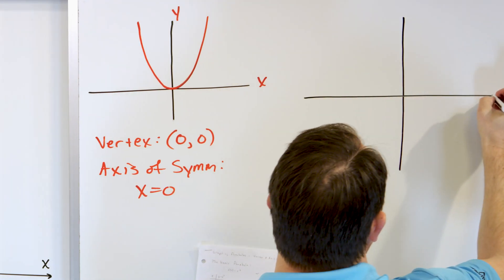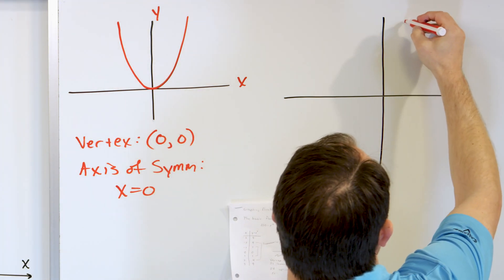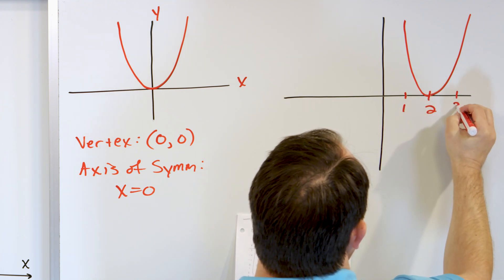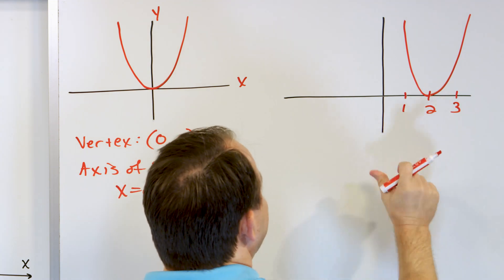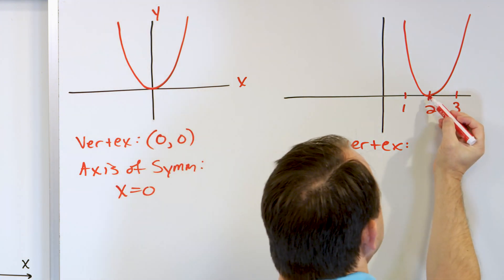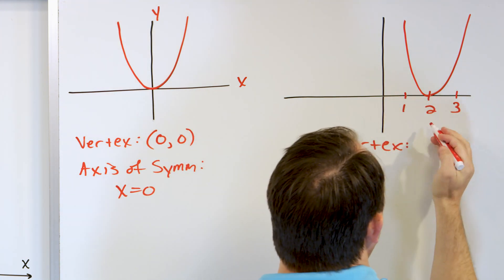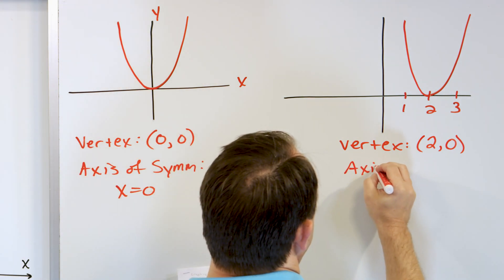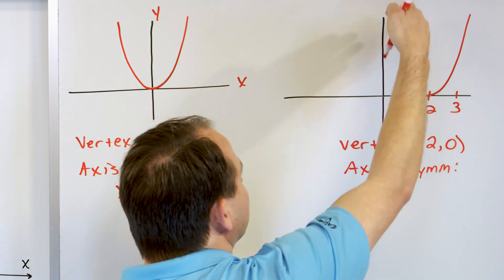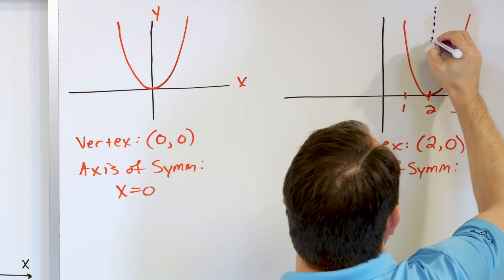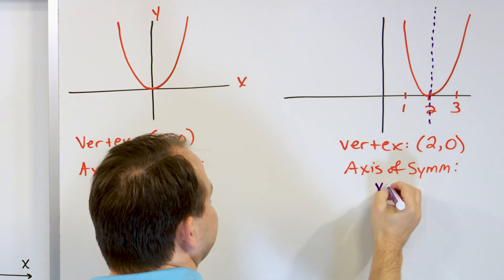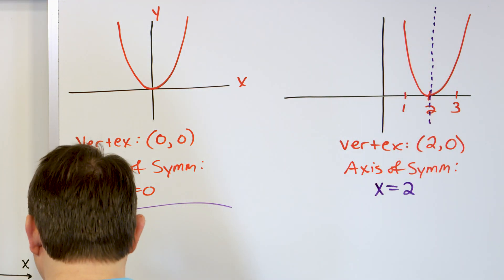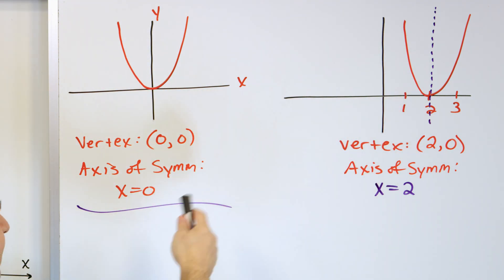Now let's take the basic parabola and shift it. Let's draw another parabola over here — it looks exactly the same, just shifted over. This is 1, this is 2, this is 3. What would the vertex and the axis of symmetry be here? The vertex is the lowest point, which I've shifted from the origin to (2, 0) — x is 2, y is zero. So the vertex is now at a different location. The axis of symmetry has to be a vertical line that bisects this parabola and goes right through the vertex, so the axis of symmetry is x = 2.